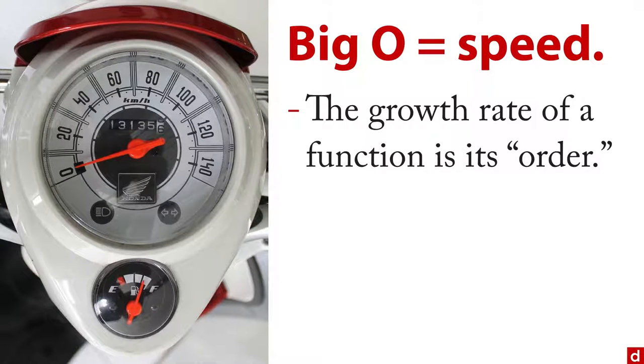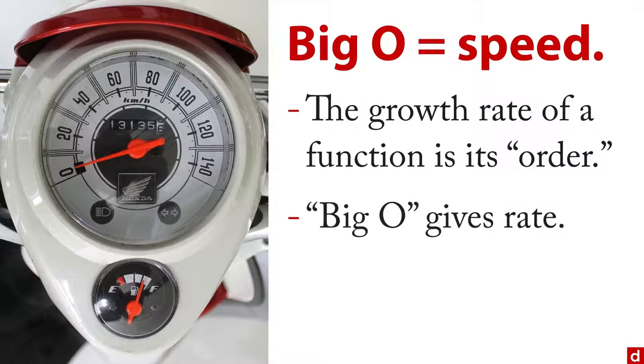If you want to be really precise, the growth rate of a function, how much more it requires as you add elements, is called its order. That's why it's Big O. That's for order. And Big O gives the rate of how things grow as number of elements grows.